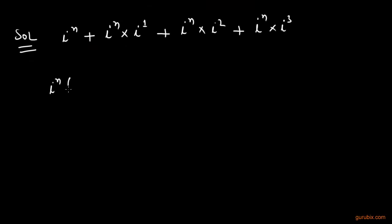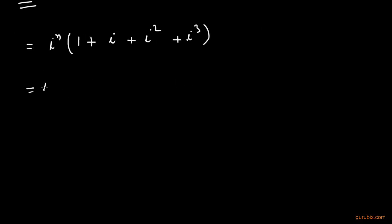Now we can take iota raised to the nth power common from all these four terms. So here remains 1, here remains iota, here remains iota squared, and here remains iota cubed. So if we further calculate it, it will be iota raised to the nth power